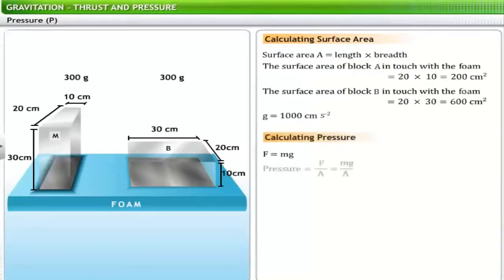Using the formula for pressure, we can now calculate the pressure of blocks A and B on the foam. The pressure of block A on the foam is 1500 dyne per centimeter square.